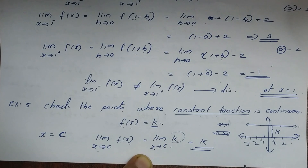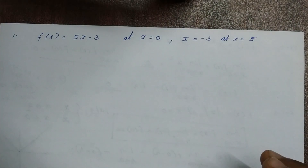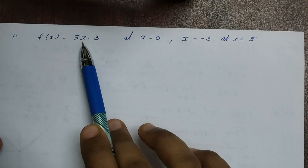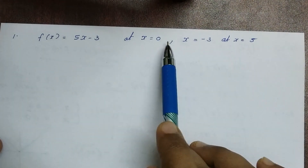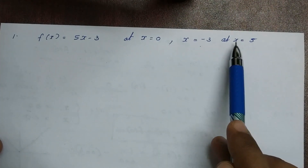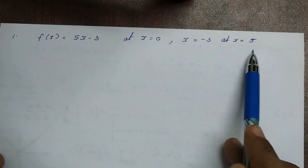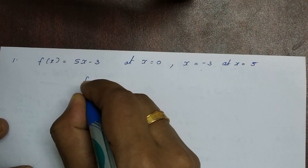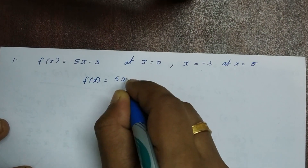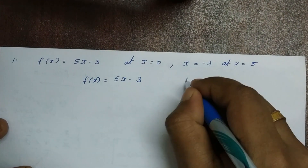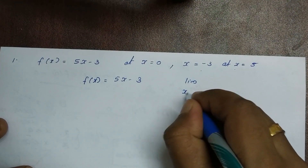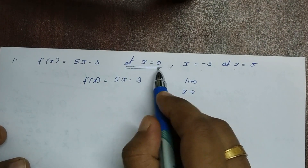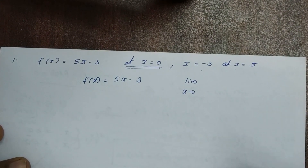Now we do problem 5.1. First question: prove that the function f(x) = 5x-3 is continuous at x=0, at x=-3, and at x=5. The continuity condition at x=0 requires that the left-hand limit equals the right-hand limit equals the value of the function at that point.